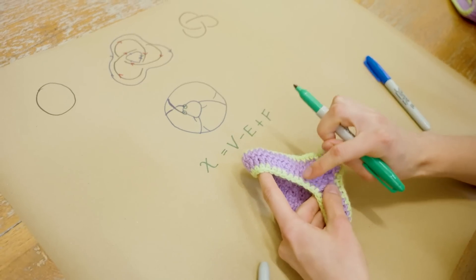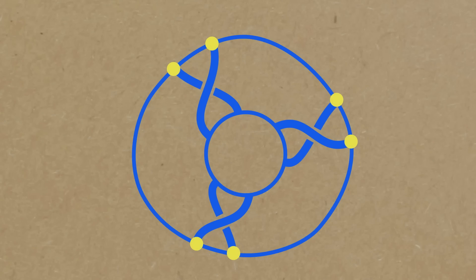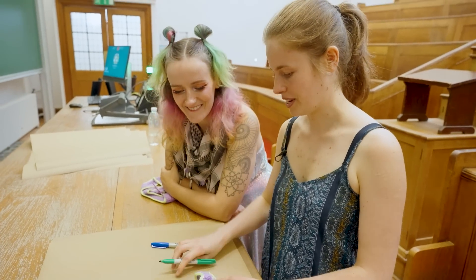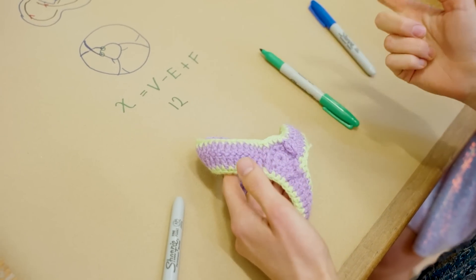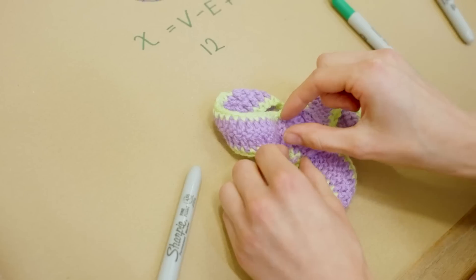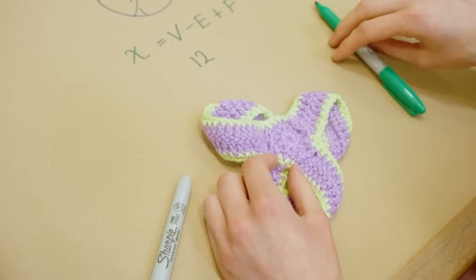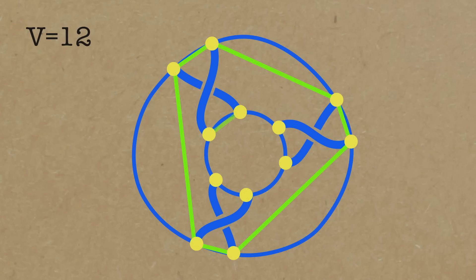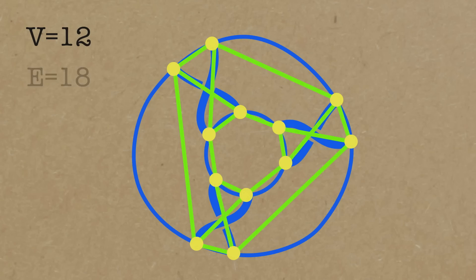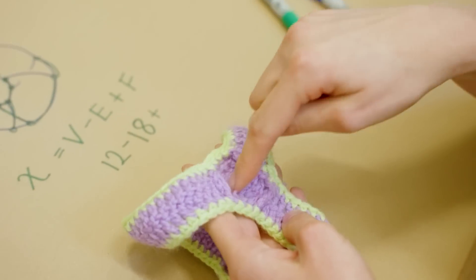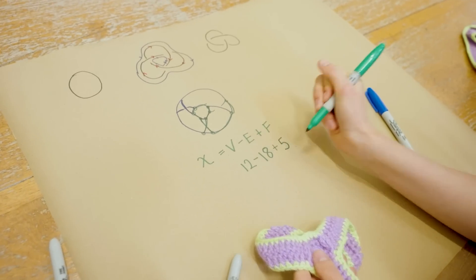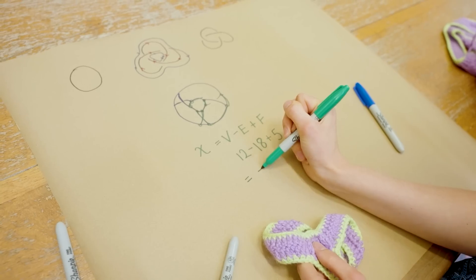In total going around there are 12 vertices: six up top, six underneath. For edges, each of the three bands has two edges — one on each side — adding six altogether. Each arc of a circle counts as one edge, giving 12 more, so 18 edges total. Faces: we've got the two circles and the three bands, so there are five faces. The Euler characteristic is therefore 12 minus 18 plus 5, which equals minus one.